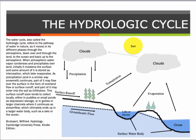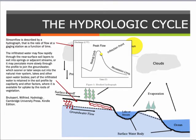The diagram in the slide depicts many parts of the cycle just described. Stream flow is described by a hydrograph, which is the rate of flow at a gauging station as a function of time. The infiltrated water may flow rapidly in the near-surface layers to exit into springs or adjacent streams, depicted by wiggly lines.